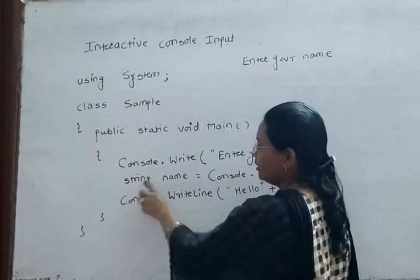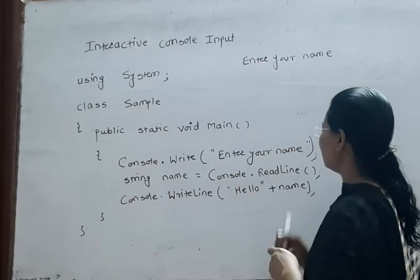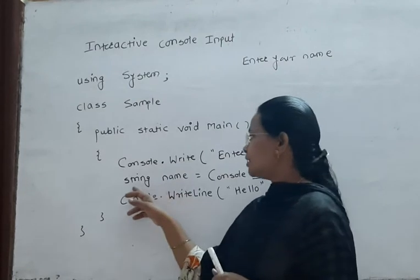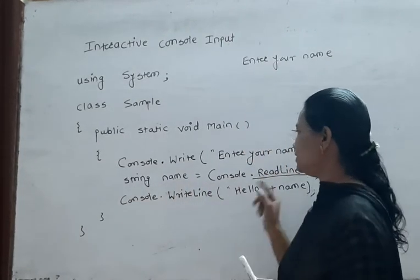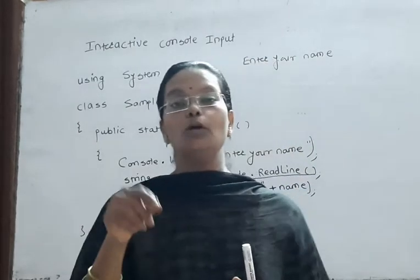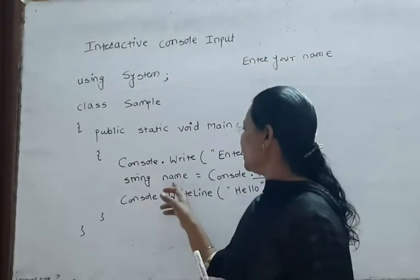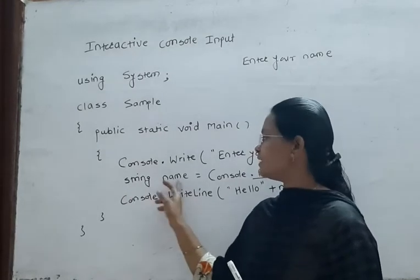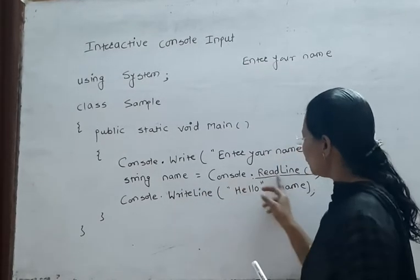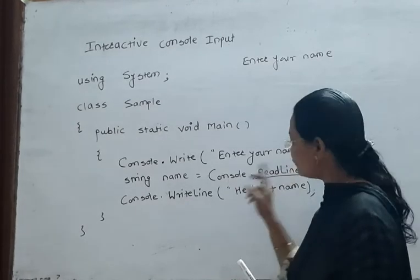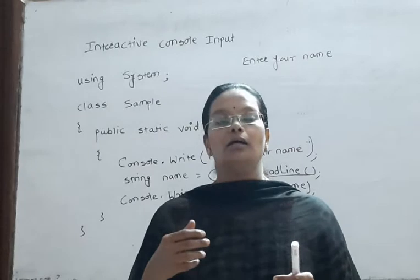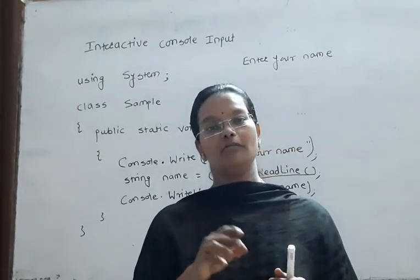Next is 'string name = Console.ReadLine()'. Here we learn about one new method — ReadLine. In this statement, string is our data type. When we declare the string data type we can store more than one character in that specific variable. So 'name' is our variable name and its data type is string. We write Console.ReadLine — this ReadLine method is also a member of the Console class. The purpose of the ReadLine method is it reads whatever input is given by the keyboard while executing the program.